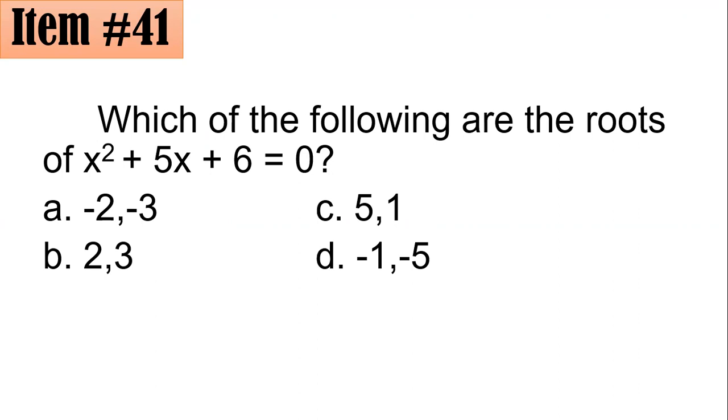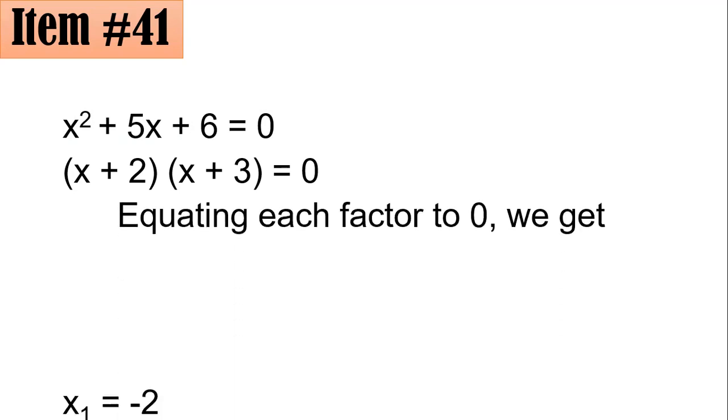When we speak about the roots, these are the values of your variable x that satisfy the equation. From here, we could actually approach this using factoring. x squared plus 5x plus 6 equals 0 could be factored as x plus 2 times x plus 3 equals 0. By the zero property of multiplication, we will equate each factor to 0 and solve for x. If x plus 2 equals 0, then negative 2 is the value of x. And if x plus 3 equals 0, then x is negative 3. That's why the values are negative 2 and negative 3. And these are your roots. We have letter A.